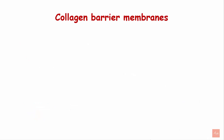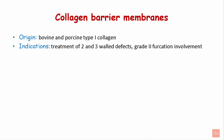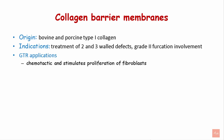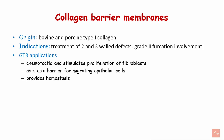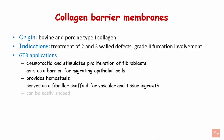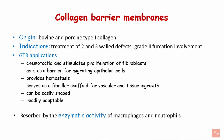Collagen membrane is one of the important resorbable membranes. It is obtained from bovine and porcine sources and consists of type 1 collagen. It is indicated in the treatment of two and three wall defects and furcation involvement. It is chemotactic and stimulates proliferation of fibroblasts. It acts as a barrier for migrating epithelial cells, provides hemostasis, and serves as a scaffold wherein vascular and tissue ingrowth can occur. It is easily shaped, readily adaptable, and is resorbed by enzymatic activity of macrophages and neutrophils.